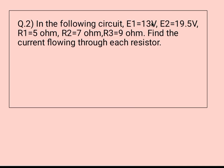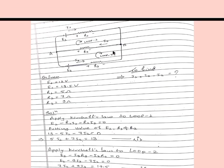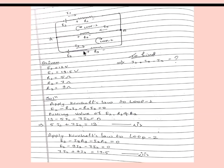Moving to question number two: in the following circuit, E1 is equal to 13 volt, E2 is equal to 19.5 volt, R1 is equal to 5 ohm, R2 is equal to 7 ohm, R3 is equal to 9 ohm. Find the current flowing through each resistor. Looking at the diagram, E1, E2, R1, R2, and R3 are all given, and we have to find I1, I2, and I3.